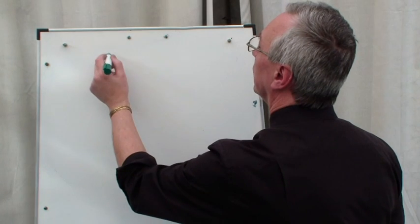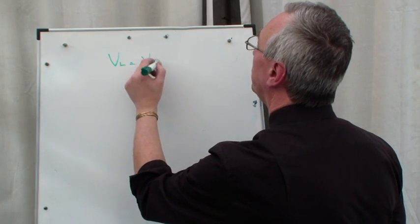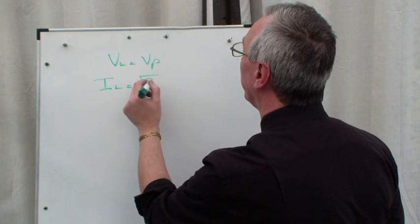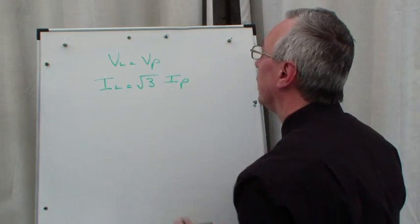Quick one on the delta: VL = VP in delta, so IL = √3 × IP.